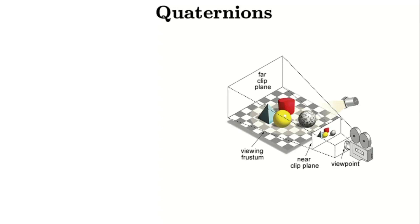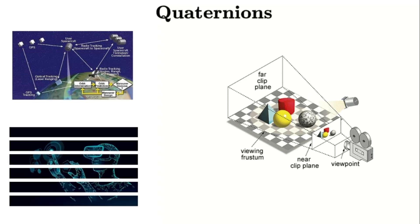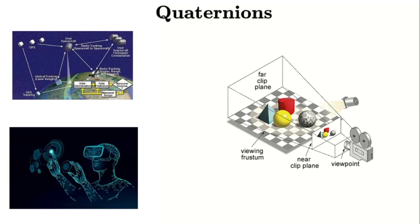What if I told you that quaternions — those mysterious four-dimensional numbers that power 3D graphics, spacecraft navigation, and even virtual reality — can actually be discovered using nothing but basic algebra? Today, we're going to derive them systematically using two powerful methods.